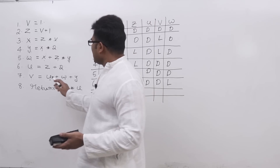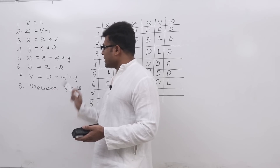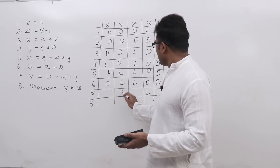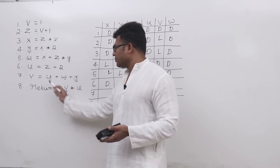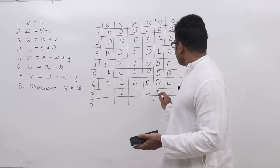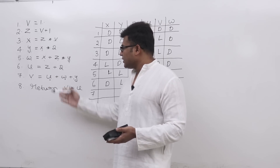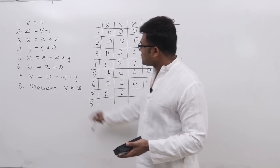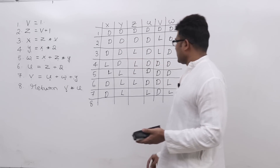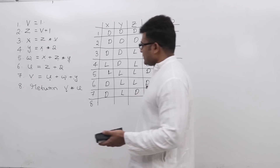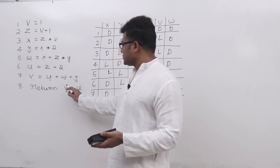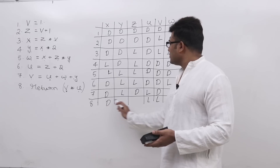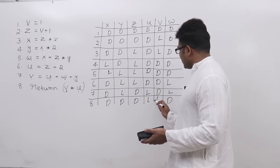At statement seven: U, W, and Y are used, so all three are live. V is defined without being used, so V is dead. X is not used after statement seven, so X is dead. Z is not used after statement seven, so Z is dead. At statement eight, which is the final statement: V and U are used, so V and U are live. All other variables are dead because that is the end of the program.